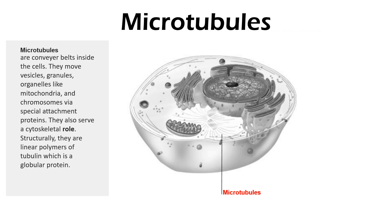Microtubules are conveyor belts inside the cells. They move vesicles, granules, and organelles like mitochondria and chromosomes via special attachment proteins. They also serve a cytoskeletal role — structurally they are linear polymers of tubulin, which is a globular protein.